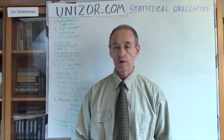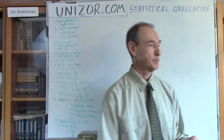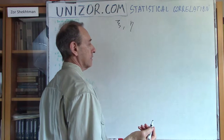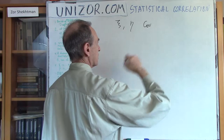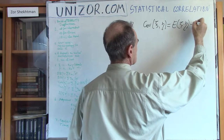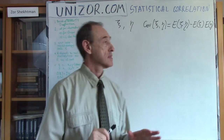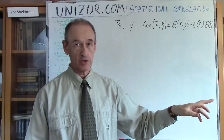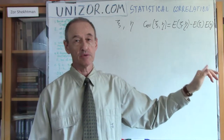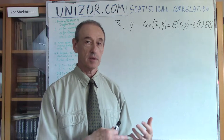Let me briefly remind you of the definition of covariance and correlation from a theory of probabilities standpoint. Consider two random variables. I introduced the covariance between them, which is the expectation of their product minus the product of their expectations. Immediately you see that if these two variables are independent from each other, then the expectation of the product equals the product of their expectations, and the whole covariance will be zero. So covariance is a measure of independence — if the variables are independent, covariance equals zero.